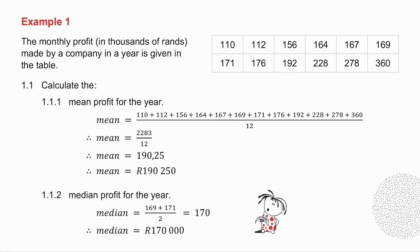To calculate the mean profit, I take the values, I add them all together, and divide by 12, because there are 12 numbers there, and I get the mean.